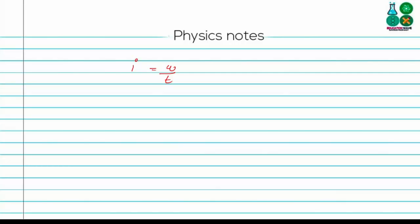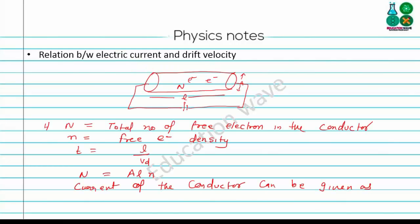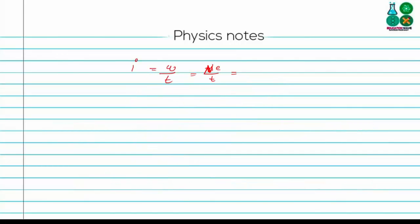Here Q is equal to N·e, so the current I = N·e / T. The value of N is A·L·n, so substituting: I = A·L·n·e / T.